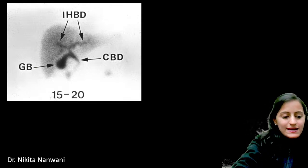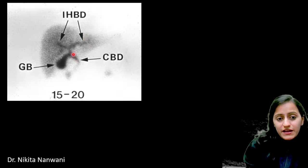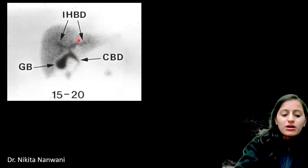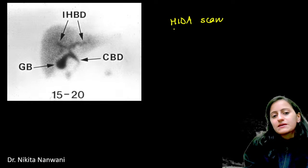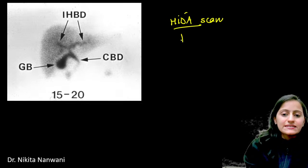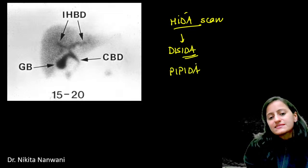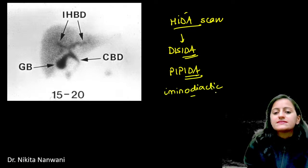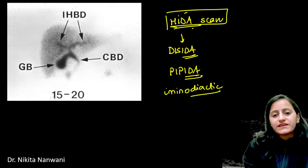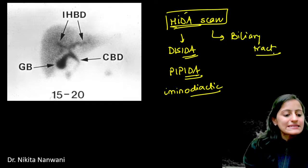A black and white image where anatomy is not very clear — this is a nuclear scan, a scintigraphy. Here we see the CBD, gallbladder, and intrahepatic radicals. The scan done for the biliary tract is the HIDA scan — using iminodiacetic acid (IDA). Other IDA-based scans include DISIDA, PIPIDA — all IDA-based scans are used for the biliary tract.